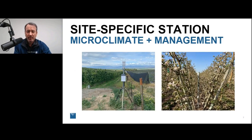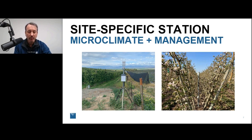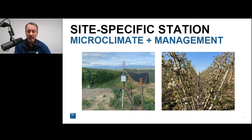So if you want a site-specific station, growers have been putting in their own stations for a while. In the past, these were quite difficult to maintain or required more expertise to install. But these days they're becoming less costly and easier to maintain, so more and more growers want weather data at their own site. There are two kinds of installations: one outside the canopy to capture the local microclimate, and another inside the canopy to capture both the microclimate and management effects like irrigation, evaporative cooling, or wind machines.